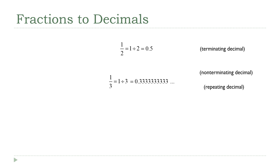In practice, I would not actually write out that many 3s. The general rule is you need to write out enough repetitions so that somebody looking at it can see the pattern, and then you can stop. So in practice I would probably write 0.333 and some dots — might even just do two 3s. There is another way of doing this: sometimes you'll see a bar written over the repeating part, which indicates that the 3 repeats all the way down.